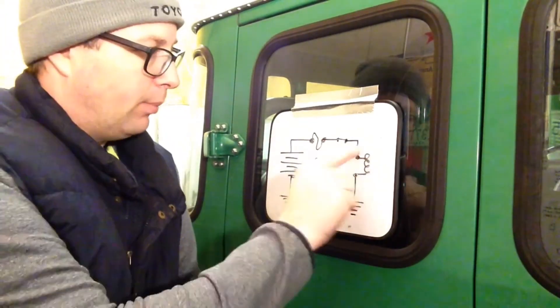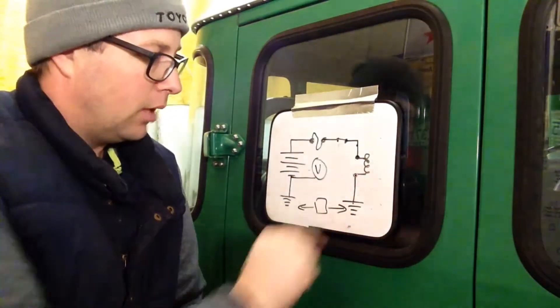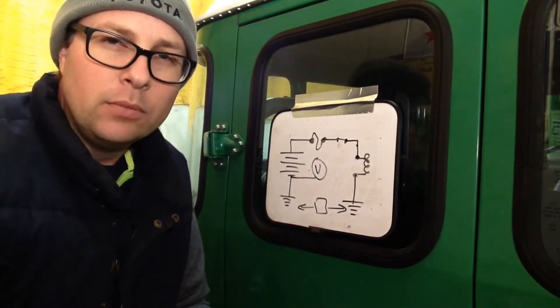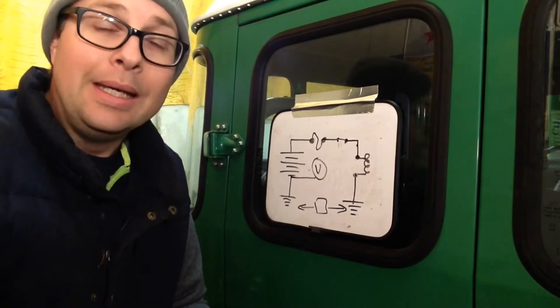My taillights don't work. My bulbs aren't lighting up. They seem to be grounded to the frame, but my headlights do work. Do my headlights ground to the frame? Do they ground to the same place? Yes, they do.